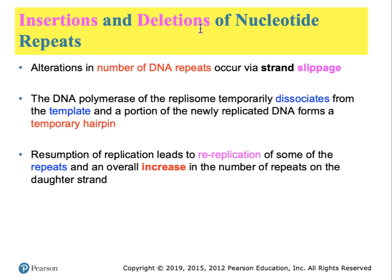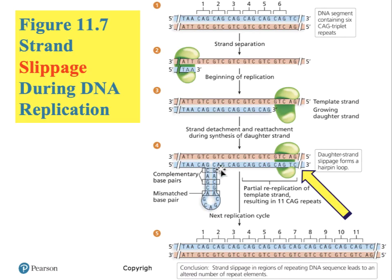Multiple insertions and deletions of nucleotides occur particularly at nucleotide repeat hotspots in the DNA, because the DNA polymerase gets disoriented. The polymerase falls off the template and the template forms a hairpin, which is responsible for introducing additional repeats. For example, if repeats are three nucleotides and we have six of them to begin with, the polymerase falls off the template, the template forms a hairpin, the DNA climbs back and copies it again — resulting in 11 repeats in this example rather than the original six.